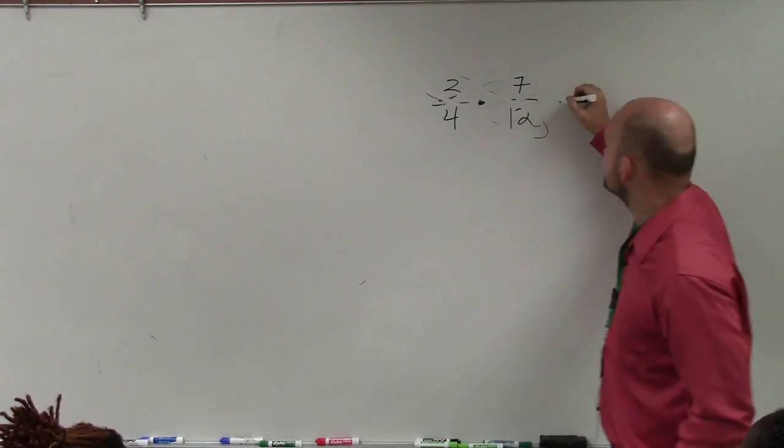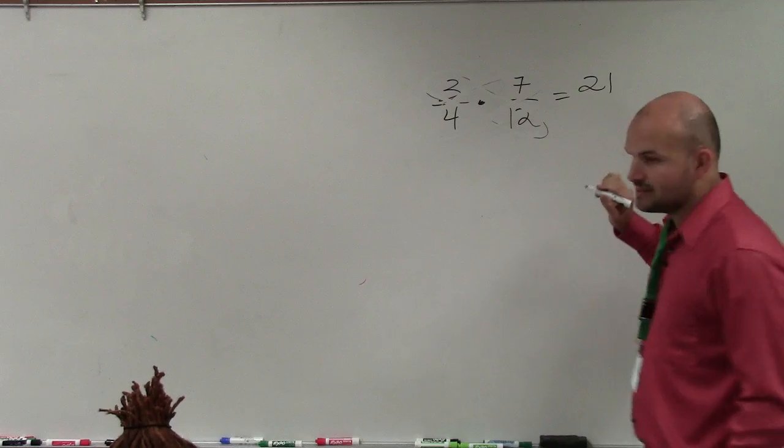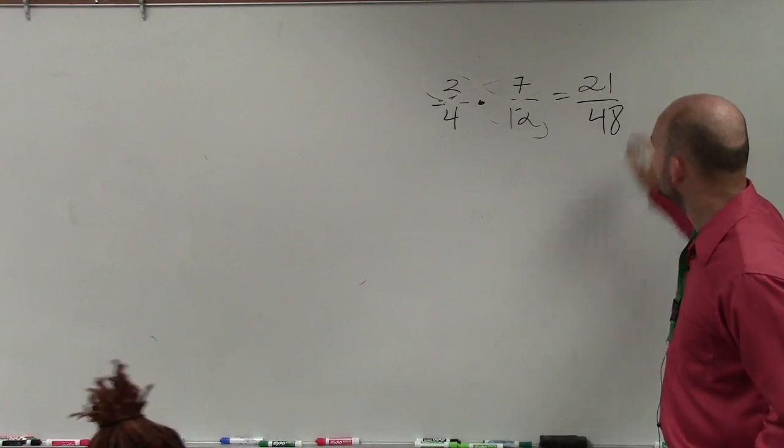So multiply across. Here I'm simply going to have 21. 4 times 12 is going to be 48.